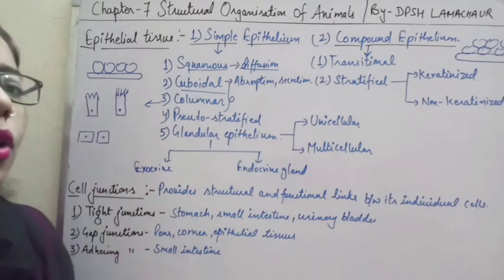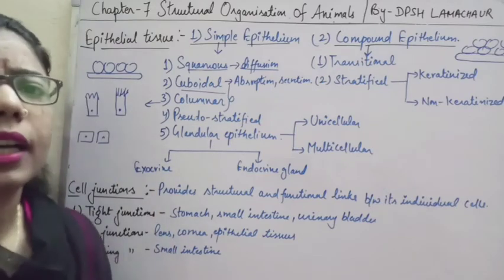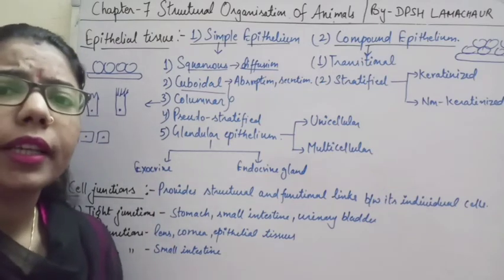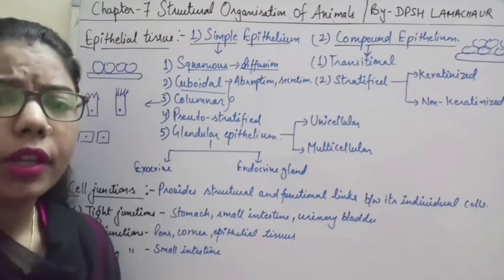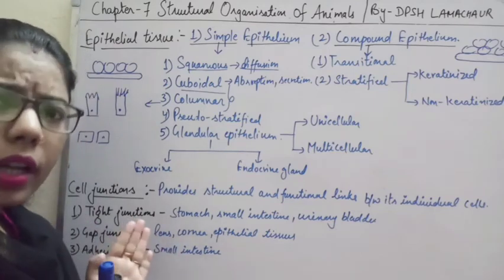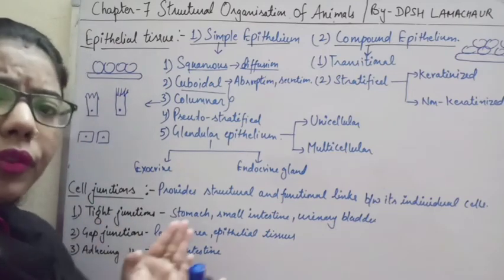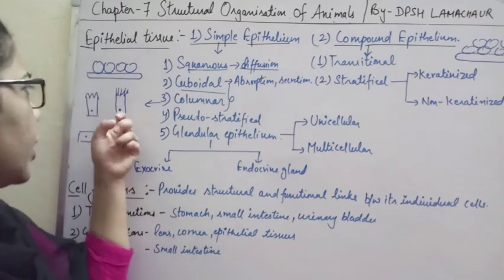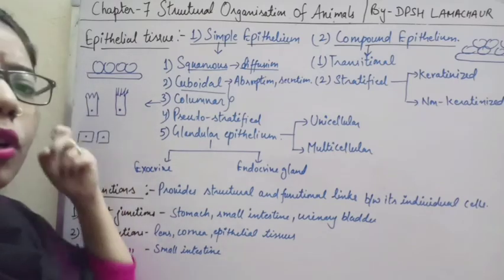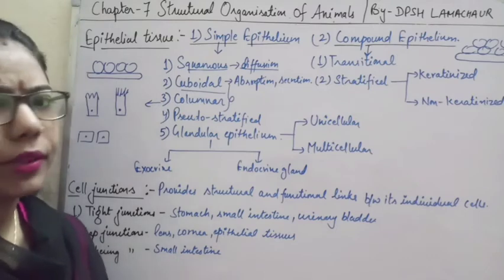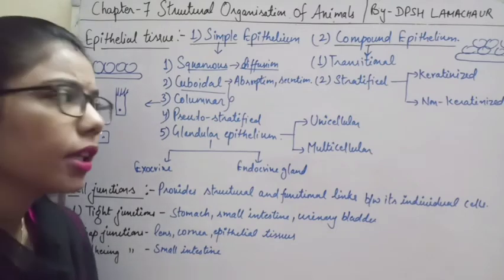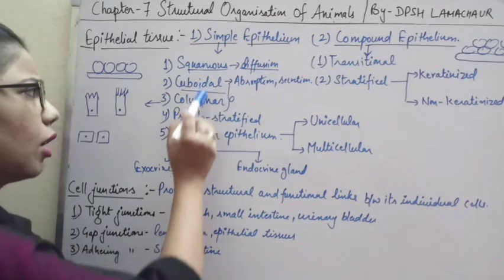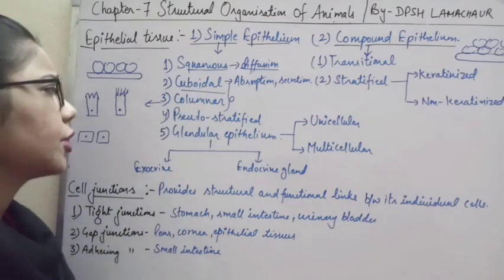An example of ciliated epithelium is the fallopian tube, where the ovum moves in only one direction. The brush-bordered epithelium is found where absorption is required. These three types — squamous, cuboidal, and columnar — were discussed in the previous lecture.